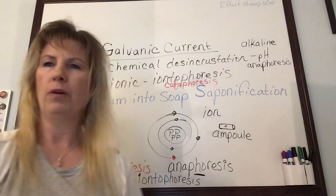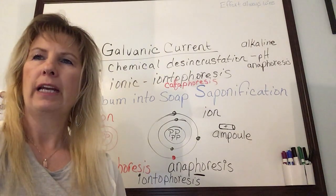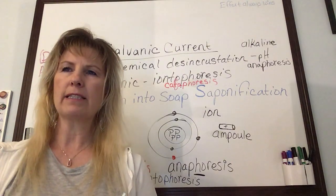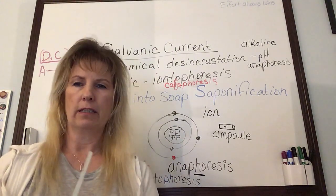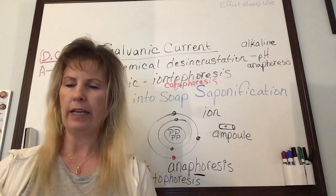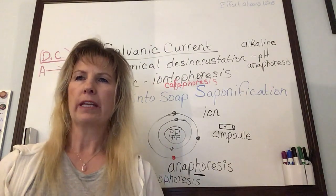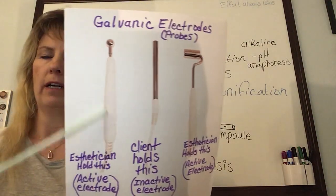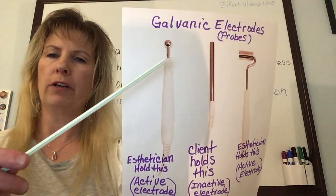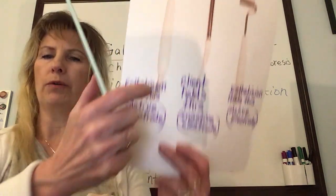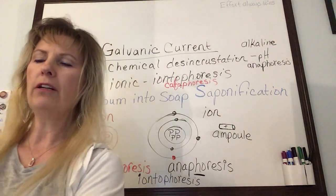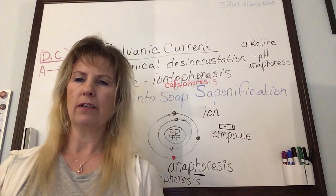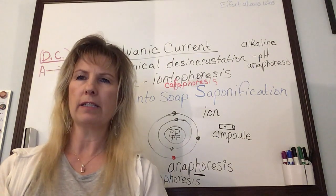Store electrodes only when completely dry. Never place metal electrodes in an autoclave unless the manufacturer specifically states it's safe. Spray and wipe the electrode handles and cords with disinfectant, and wipe down the whole machine.